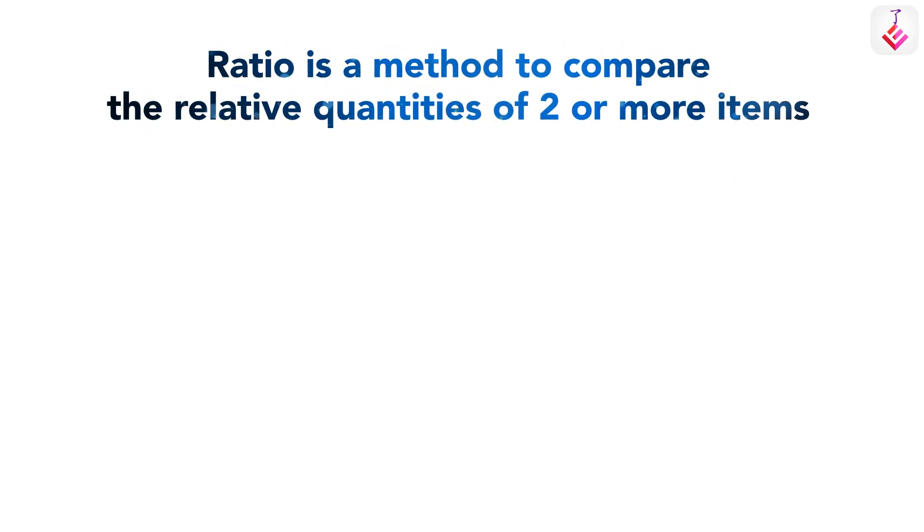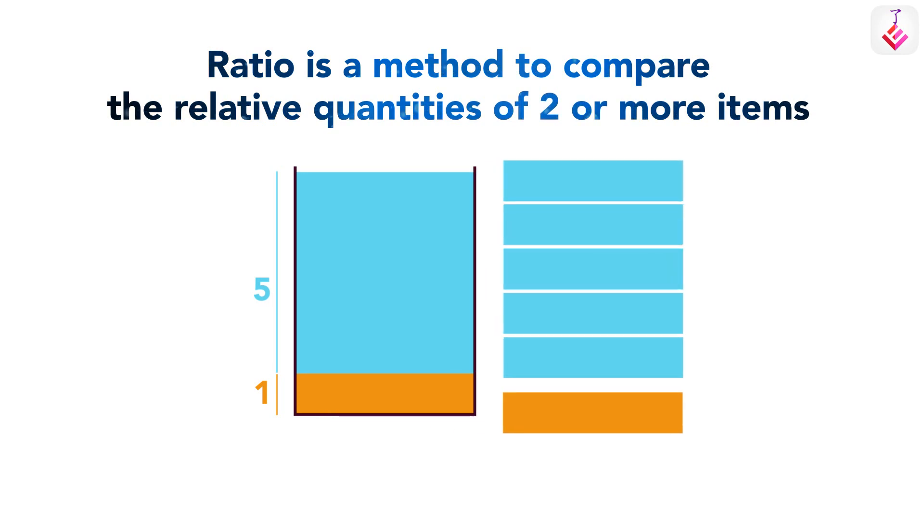Let's say squash is made using the ratio juice to water equals one to five. For every one part of juice, we need five parts of water. So we say juice to water is in the ratio one to five.